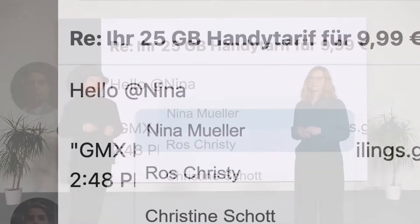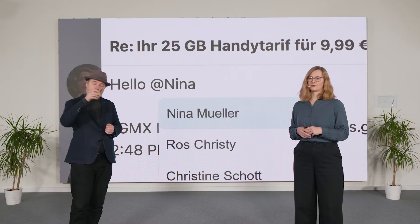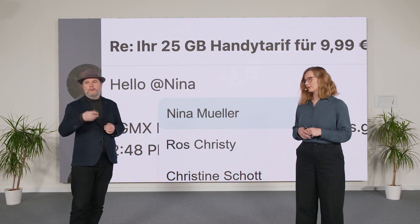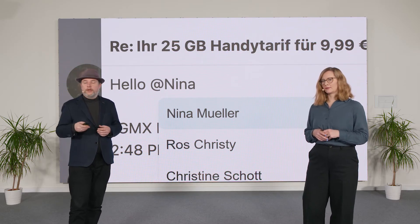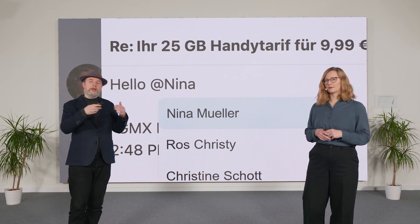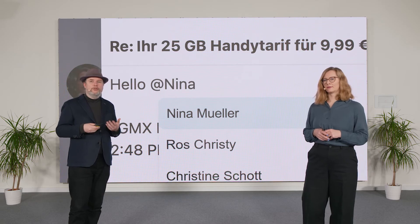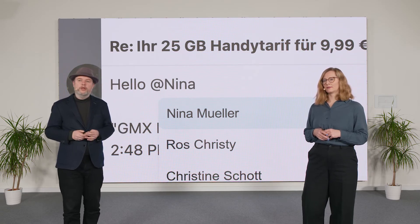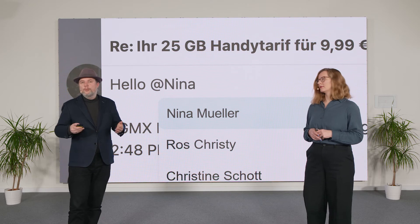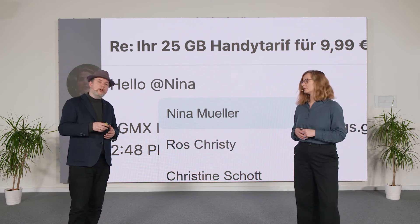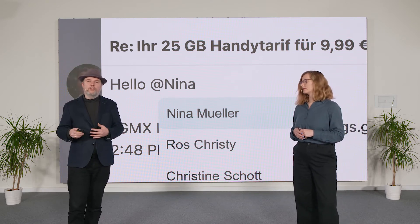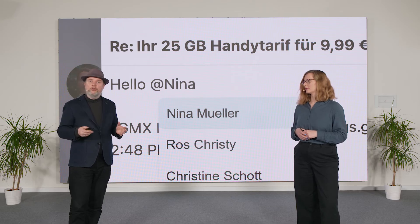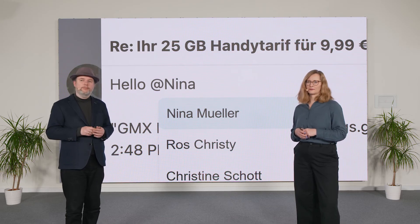You just type the @ symbol, then pick the person — you can type part of the name and pick the right person. They are also automatically added to the email recipient field so you don't need to do that twice. On the receiving side, you can filter messages that mention you to make sure you don't miss anything.